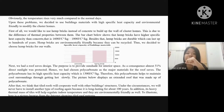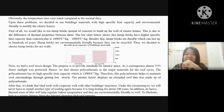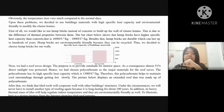First of all, we would like to use hem bricks instead of concrete to build the walls of the cluster homes. This is due to the difference in thermal properties between them. The bar chart below shows that hem bricks have higher specific heat capacity than concrete — that is 1,600 J per °C per kilogram compared to 1,000 J per °C per kilogram. Besides that, hem bricks are durable and can last up to hundreds of years, and they are environmentally friendly because they can be recycled. Thus, we decided to choose hem bricks for our walls.